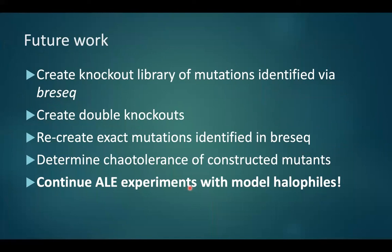Future work involves completing a library of all mutations identified via Breseq, creating double knockouts — removing the MenC gene, RCS-B gene, and RCS-D gene in tandem — to identify changes in magnesium chloride tolerance. The best scenario would be to recreate the exact mutations identified via Breseq. Once this library is constructed, I can determine the MgCl₂ tolerance of my mutants to elucidate exactly how these genes affect magnesium chloride tolerance in E. coli, with broader relevance to astrobiology.